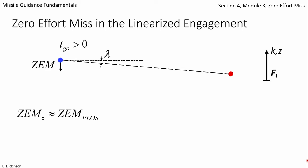That means that zem perpendicular to the line of sight is the present vertical separation plus the relative velocity multiplied by time to go.